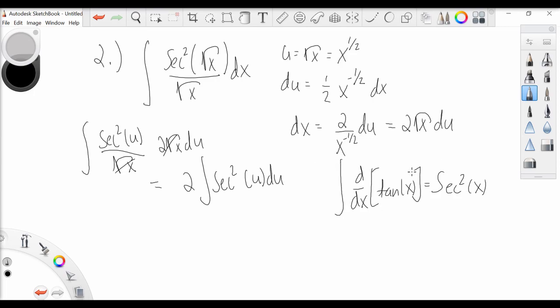And thus the antiderivative of secant squared x is simply equal to tangent x. So we have 2 tangent of u plus c. Plugging back in for x, we have 2 tangent of root x plus c, and that is our final answer.